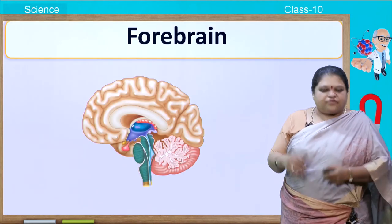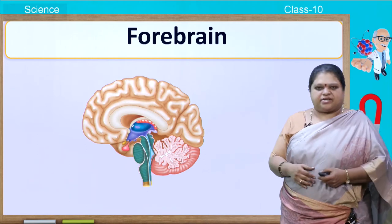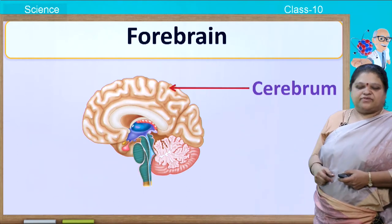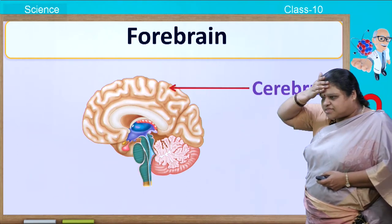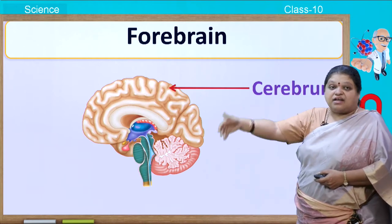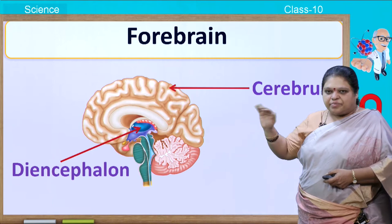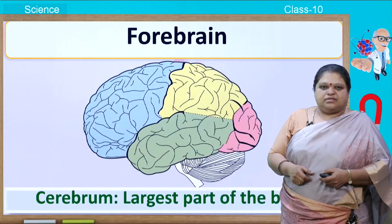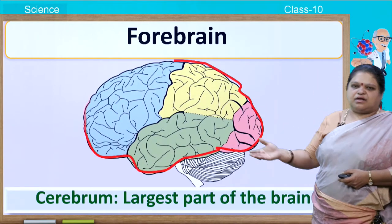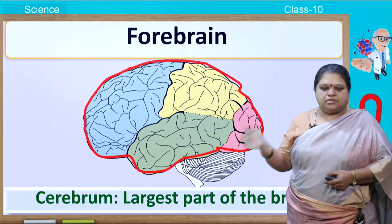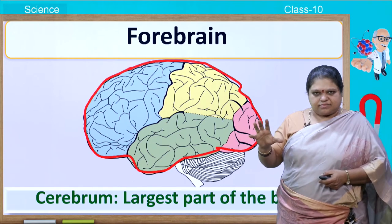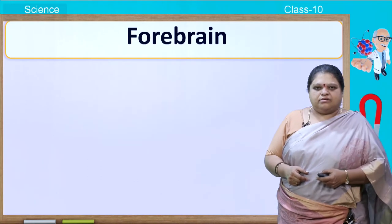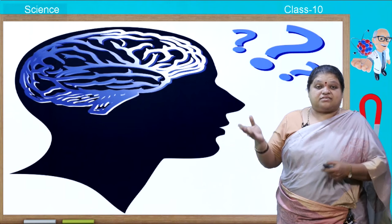Coming to the forebrain — this is the biggest part of the brain. The forebrain is made up of the cerebrum, which is the largest part of the brain, extending from the front to the back. Below the cerebrum you find the diencephalon. Nearly 80 percent of the brain is occupied by the cerebrum.